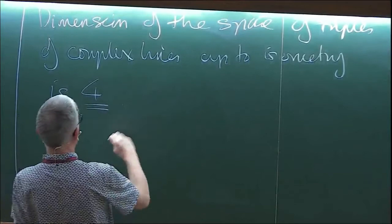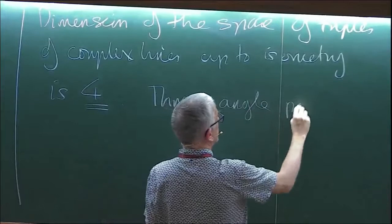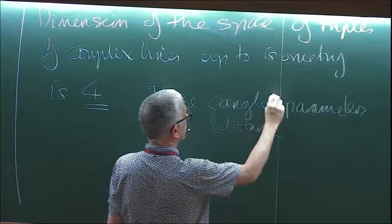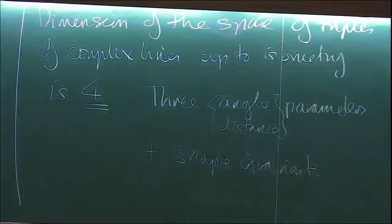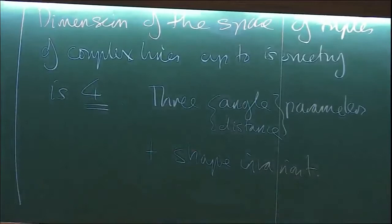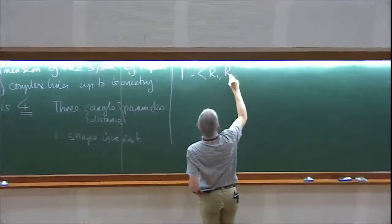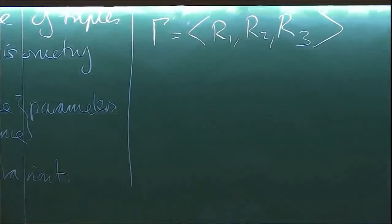I'm going to be interested in the group Γ generated by R1, R2, and R3. The main question that interests me — and I hope most people in this room — is: when is that group discrete?